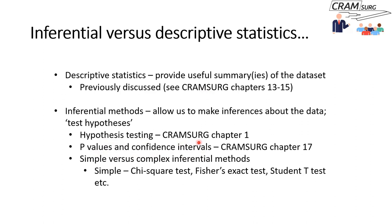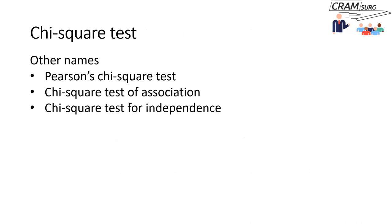Hypothesis testing was in CRAM Surge chapter 1. P-values and confidence intervals were discussed in CRAM Surge chapter 17. When we talk about inferential methods, there are some straightforward simple methods like the chi-square test and Fisher's exact test, and some complicated methods. We thought it would be useful for trainees to discuss some of the simple inferential methods — and today we're going to discuss the chi-square test.